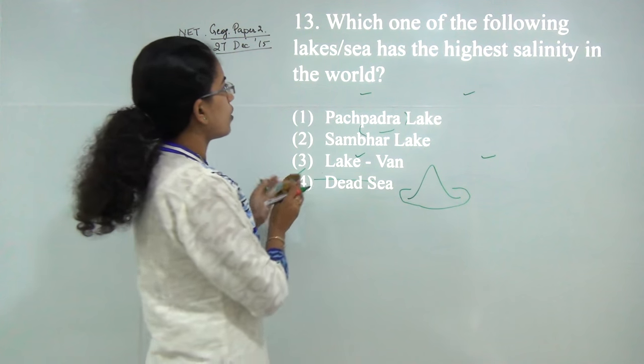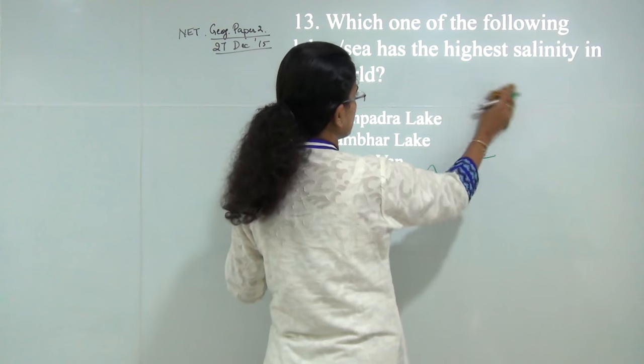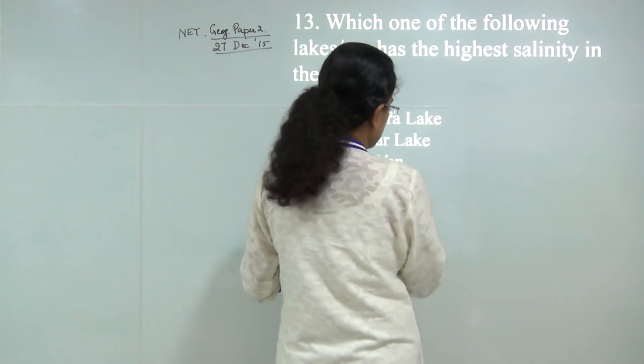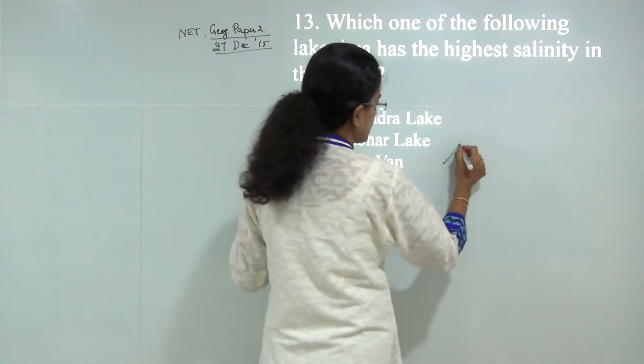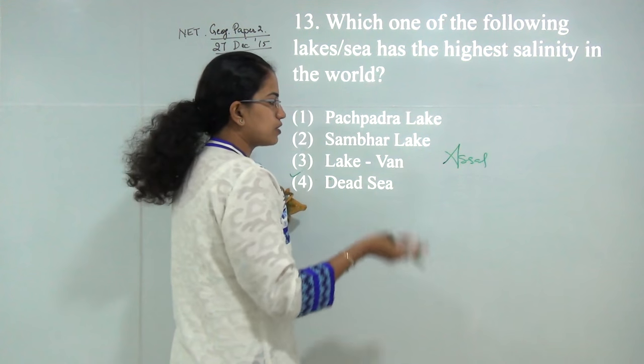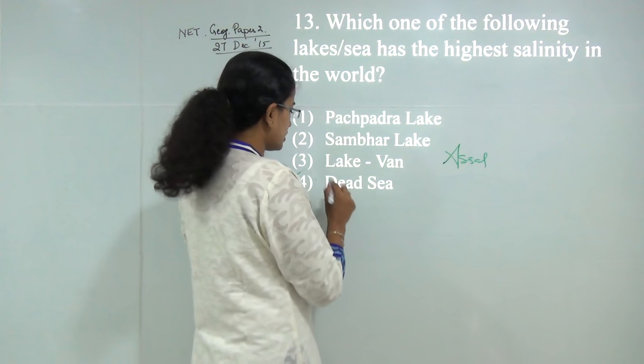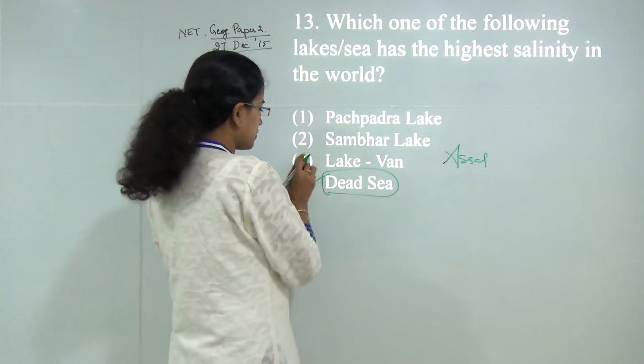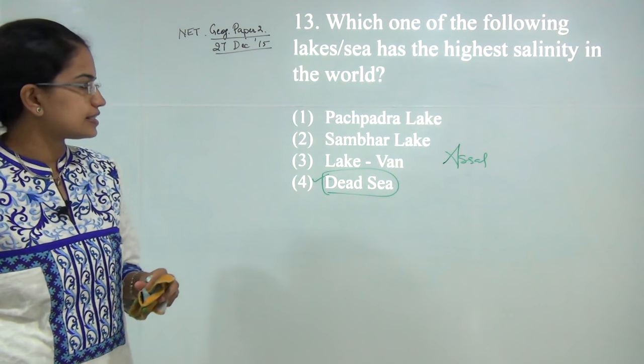Next: which of the following lakes have highest salinity in the world? The highest salinity is of Lake Assal. Since Lake Assal is not in the choice, we go to the next closest: Dead Sea. The answer would be 4, Dead Sea.